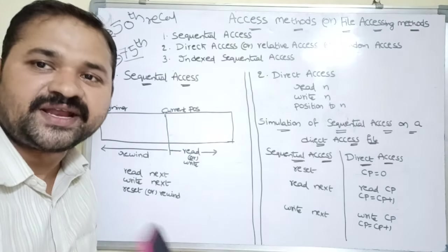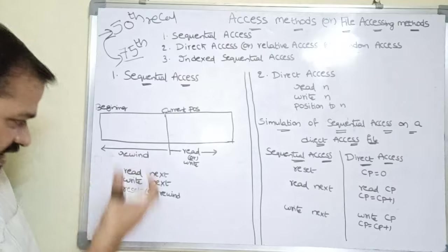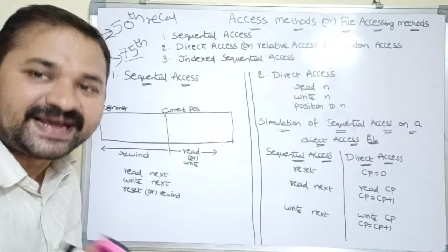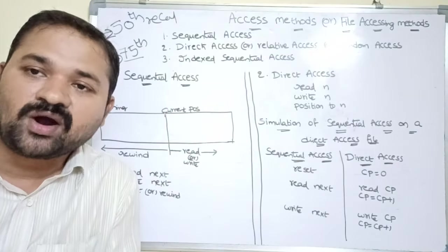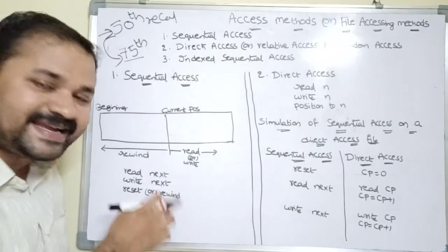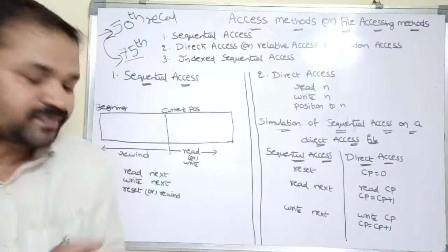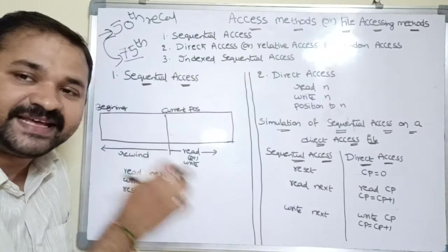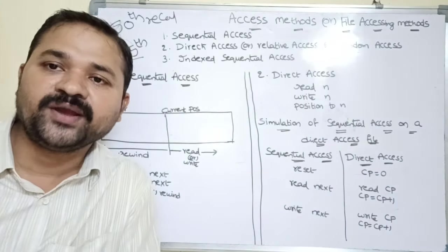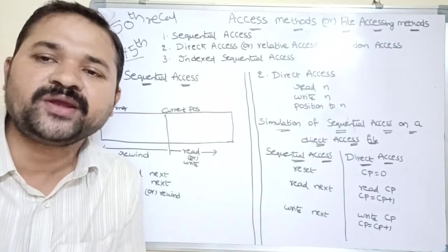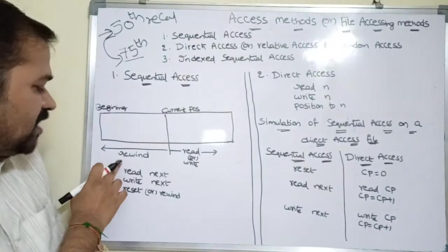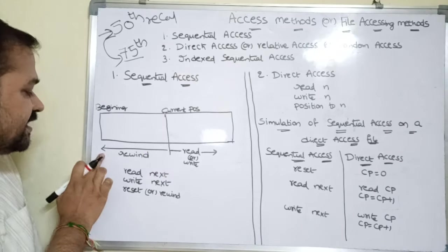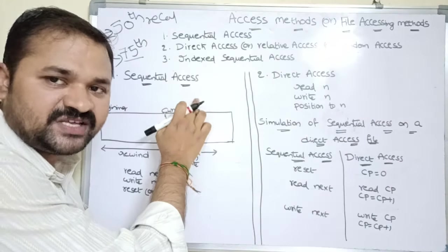The operations in sequential access are: read next — the next record will be read and the read pointer moves to the next position; write next — write the next record and the write pointer moves to the next position. So both the read pointer and write pointer are updated while performing read next and write next. The third operation is reset or rewind, which moves to the beginning position of the file.